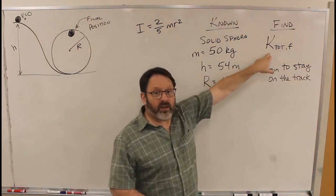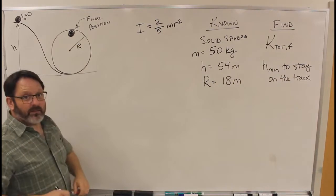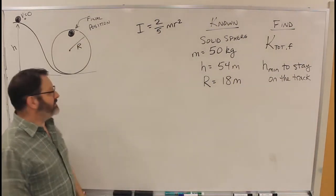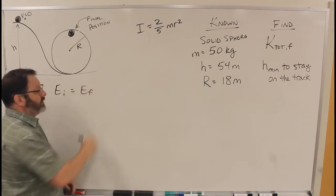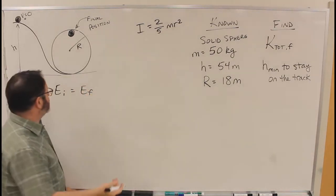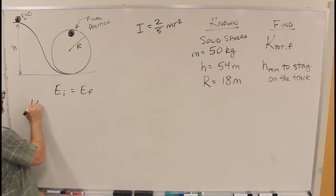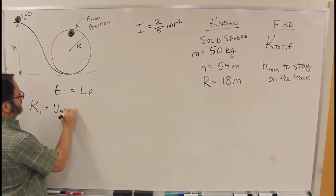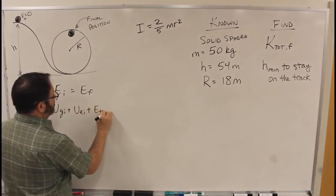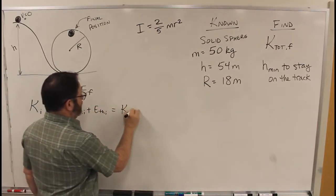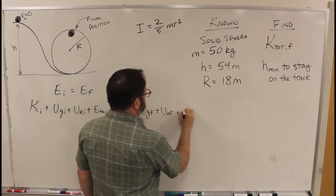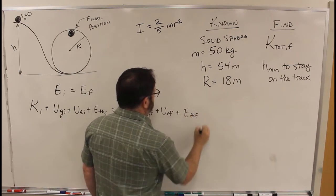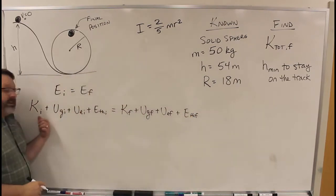First, let's find the total kinetic energy at this point. So, conservation of energy. There's no external work being done by an external force, so K initial plus gravitational initial, spring initial, thermal initial, K final, gravitational final, spring final, and thermal final.